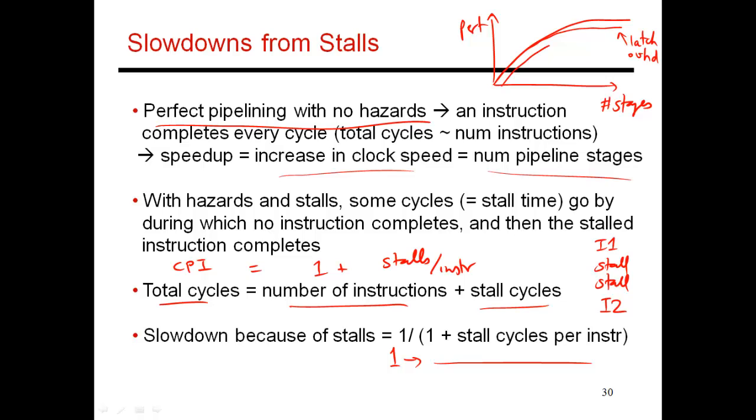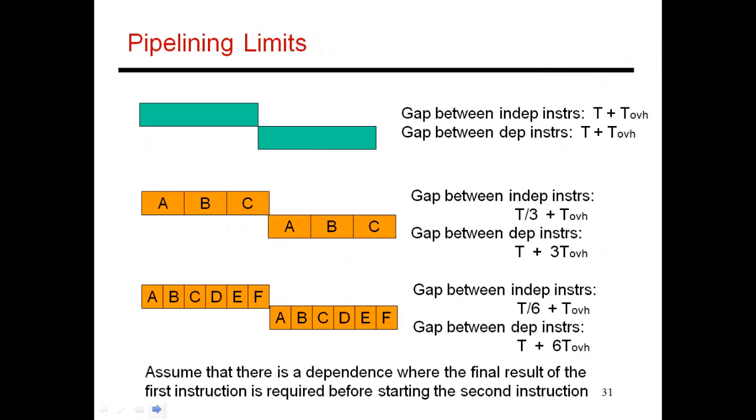What it actually looks like is something that looks more like this. That is, as I make my pipeline deeper, performance improves, it hits an optimal point, and then it actually starts to degrade. So we have to realize that you can't pipeline forever. And that's why this is an important concept to understand and recognize. So let's see why the curve is going to have a shift like that.